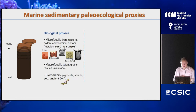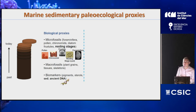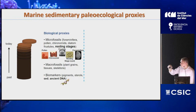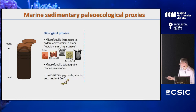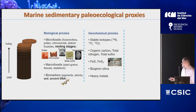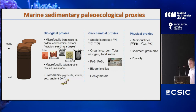In paleoecology, the approach I use most in marine coastal ecosystems is the marine sedimentary paleoecology approach. This consists of using sediment cores separated into layers, dated, and from which you can reconstruct community changes over time. You can use many different proxies: biological proxies like foraminifera shells, pollens, diatoms, and resting stages, but also ancient DNA. There are also geochemical proxies such as stable isotopes, organic carbon, iron composites, silica, and heavy metals to study pollution evolution, and physical proxies like radionuclides, sediment grain size, and porosity.